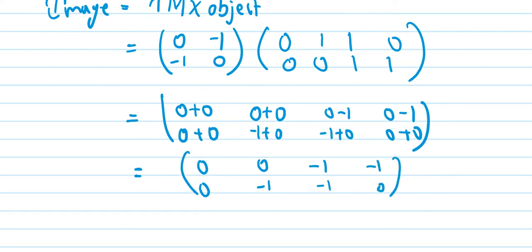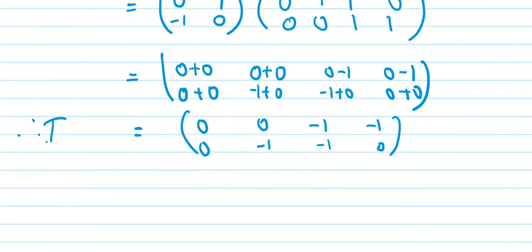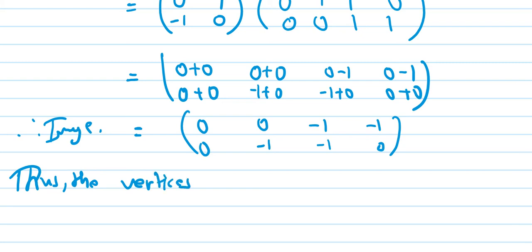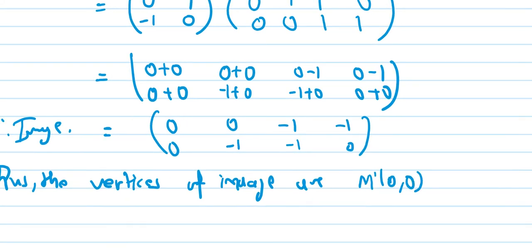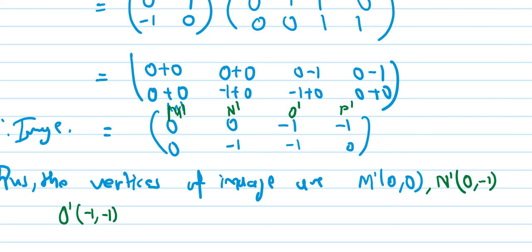So the image matrix gives us the vertices of the image. M dash is (0,0), N dash is (0,minus 1), O dash is (minus 1, minus 1), and P dash is (minus 1, 0). These are the vertices of the transformed quadrilateral.